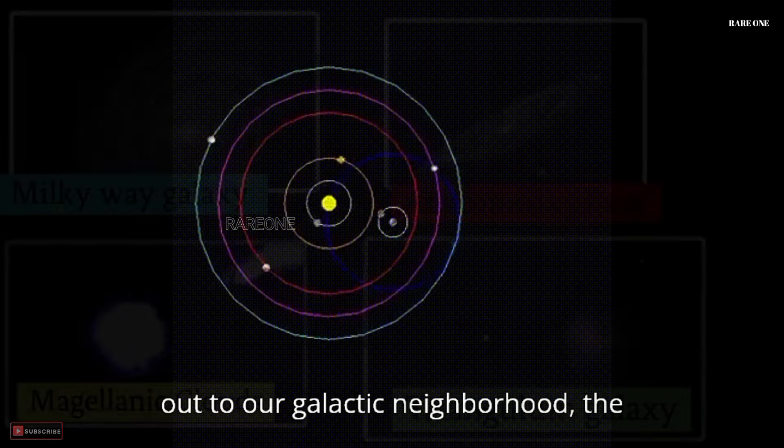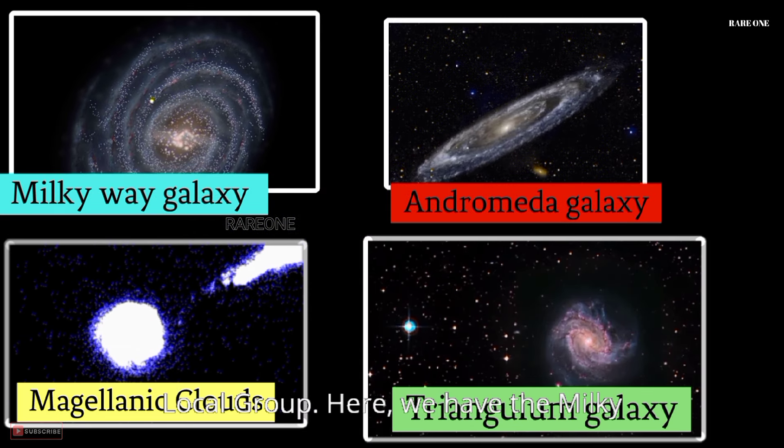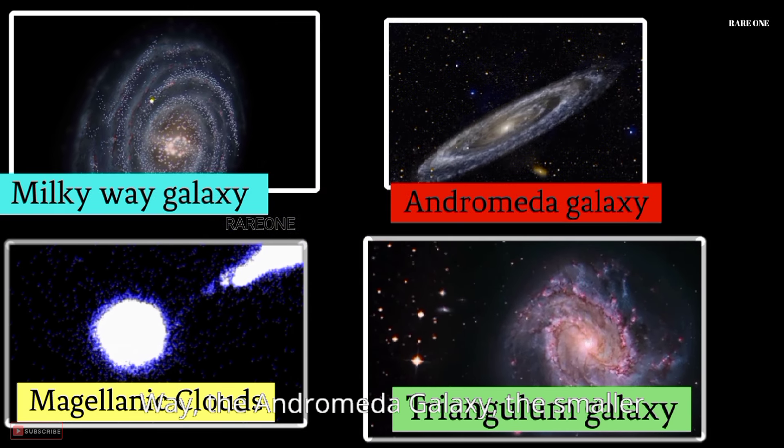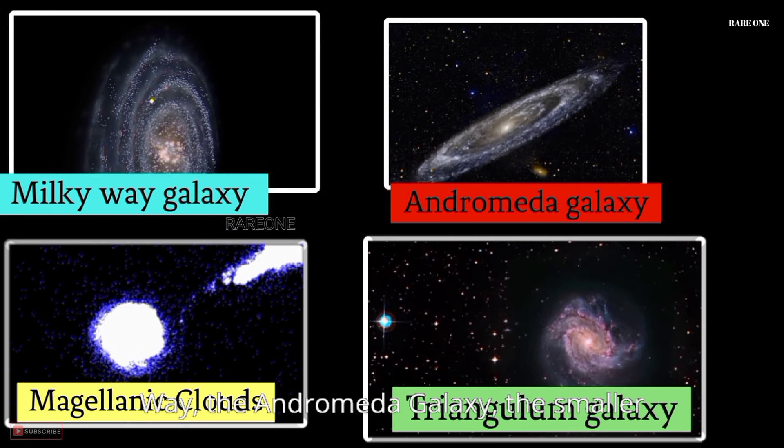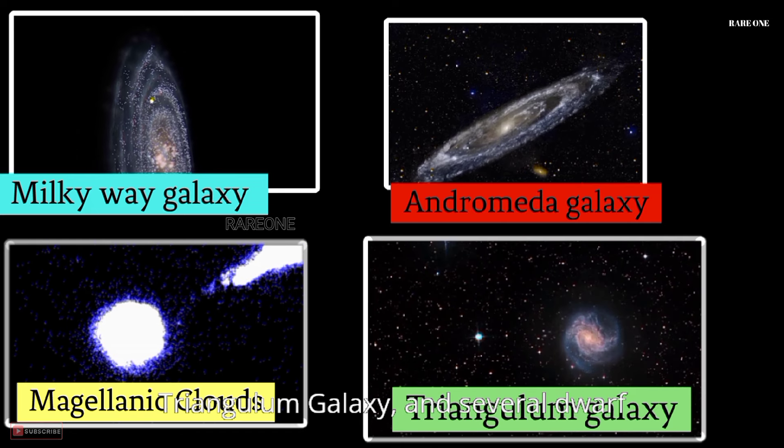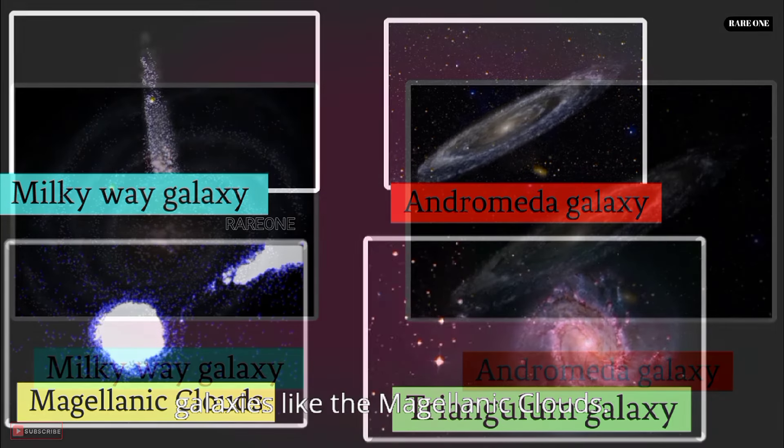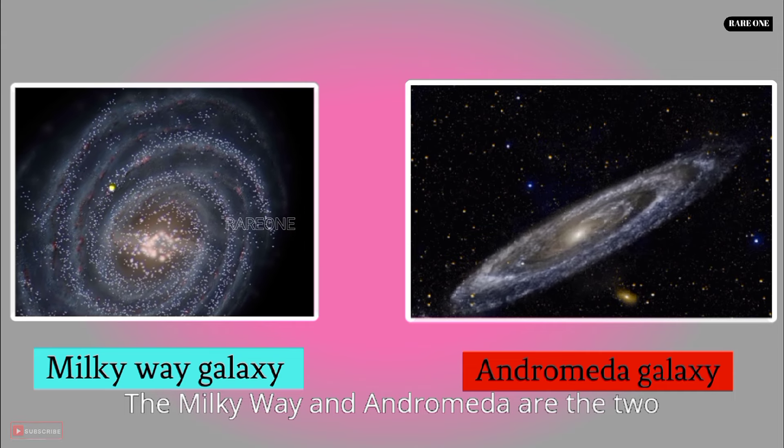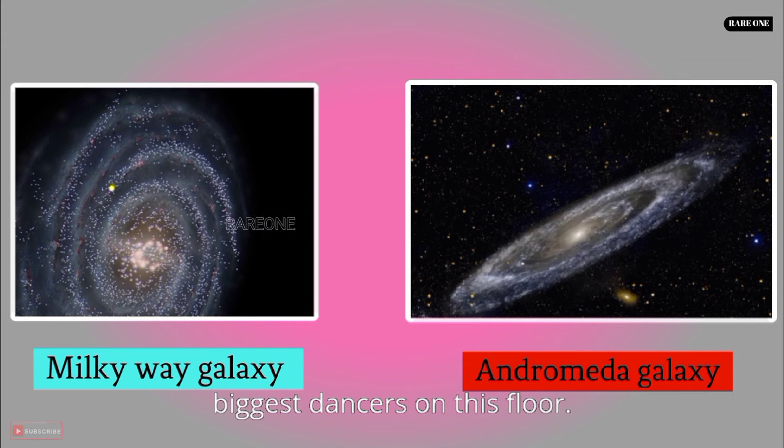But let's zoom out to our galactic neighborhood, the local group. Here, we have the Milky Way, the Andromeda galaxy, the smaller Triangulum galaxy, and several dwarf galaxies like the Magellanic clouds. The Milky Way and Andromeda are the two biggest dancers on this floor.